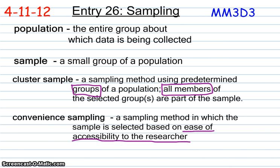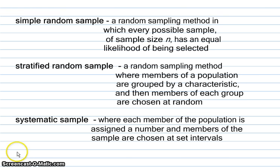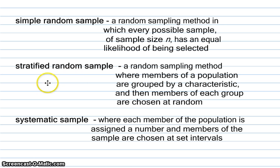Next to the definition — it's kind of long, so take a minute and copy them down. There are three right here: we have simple random sample, stratified random sample, and systematic.